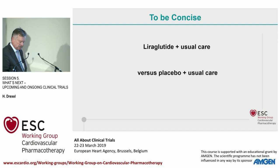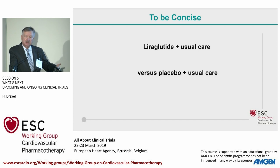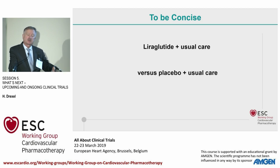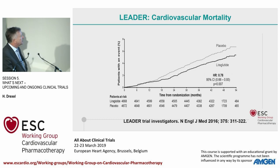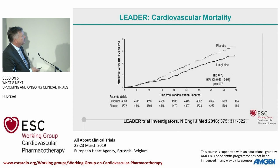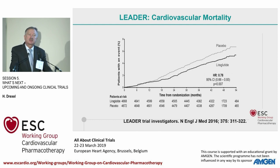LEADER — to be concise — like many trials in lipidology now tries to do better than standard therapy. This means Liraglutide plus the usual care, the best diabetes care available, versus placebo plus the best therapy available at that time. Looking at that, you see a major difference in cardiovascular mortality. Published in 2016, the hazard ratio is 0.78 — a remarkable reduction in cardiovascular mortality by Liraglutide, which is an injectable drug, as all GLP-1 receptor agonists are.